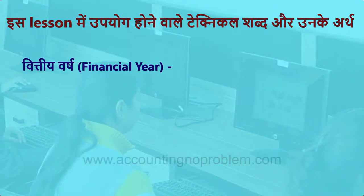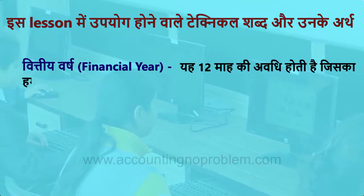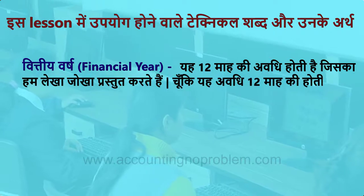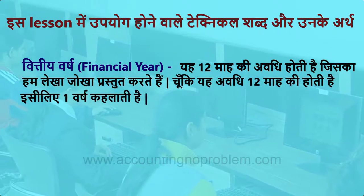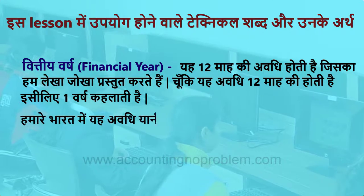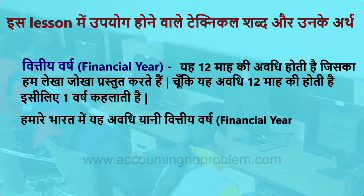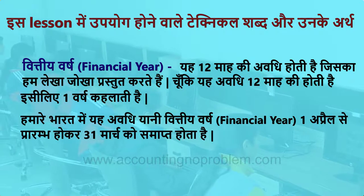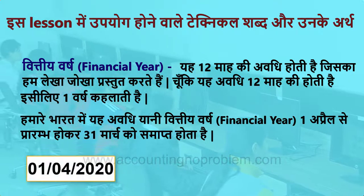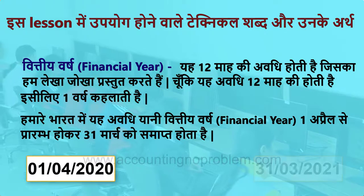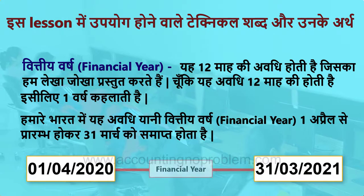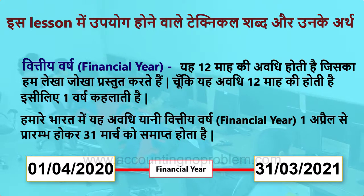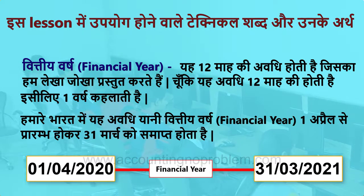वित्तीय वर्ष यानि Financial Year — यह 12 माह की अवधि होती है जिसका हम लेखा-जोखा प्रस्तुत करते हैं। चूंकि यह अवधि 12 माह की होती है इसलिए एक वर्ष कहलाती है। हमारे भारत में वित्तीय वर्ष एक अप्रैल से प्रारंभ होकर 31 मार्च को समाप्त होता है, उसे एक Financial Year कहेंगे।